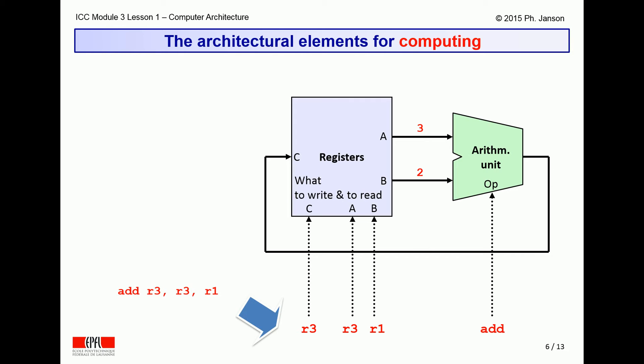Second, the computer then needs to instruct the arithmetic unit to add these two values. The arithmetic unit does so and produces the sum 5 on its output lines back to the register bank.